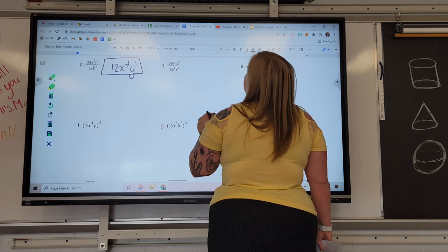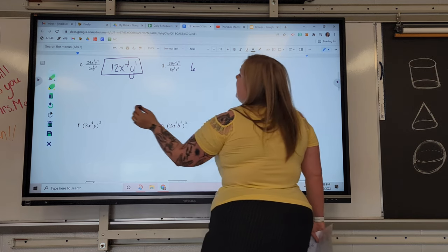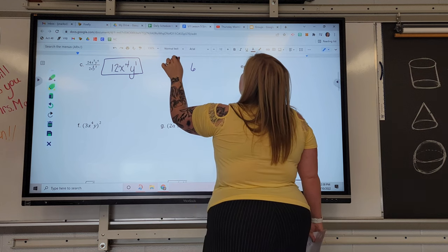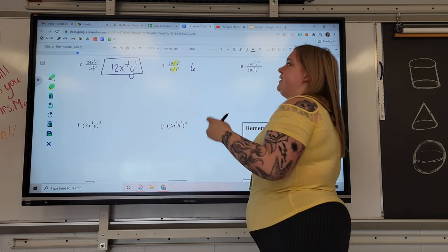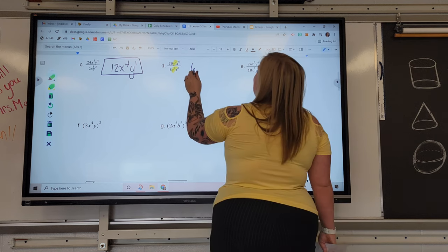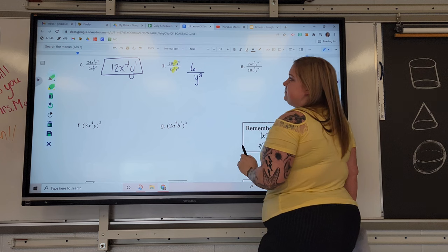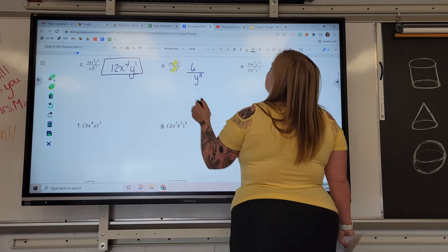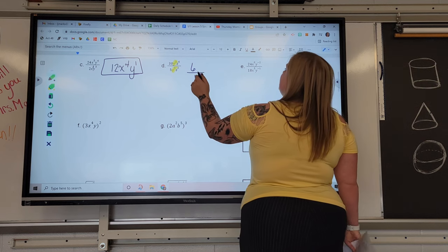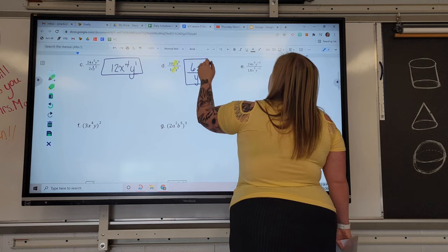For D, 30 divided by 5 is 6. Y's, I have two of them on top and five of them on bottom. Two of them would cancel, and three of them would be left, but the leftovers are on the bottom because there's more Y's on the bottom than the top. Z to the 6th and Z to the 2nd, two would cancel, four would be left, and those leftovers are on the top.